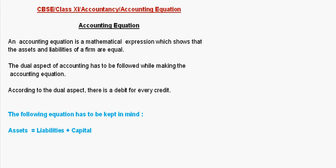The dual aspect of accounting states that there is a debit for every credit. According to this dual aspect, the accounting equation that we have to remember is: Assets is equal to Liabilities plus Capital. This is the basic accounting equation which you should never forget, and after every transaction in the accounting equation we can check whether our assets is equal to liabilities or not.